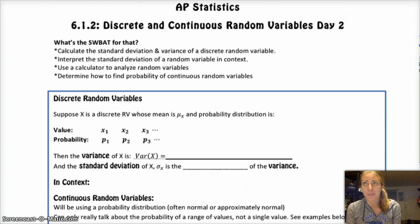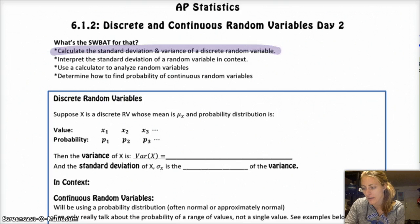This is the second day, so we've already talked about how to find the mean of discrete random variables and basically what a random variable is. Today we're going to do standard deviation and variance for discrete random variables and then talk about what that means in context because stats is all about context. If you don't conclude in context, you can't get full credit.